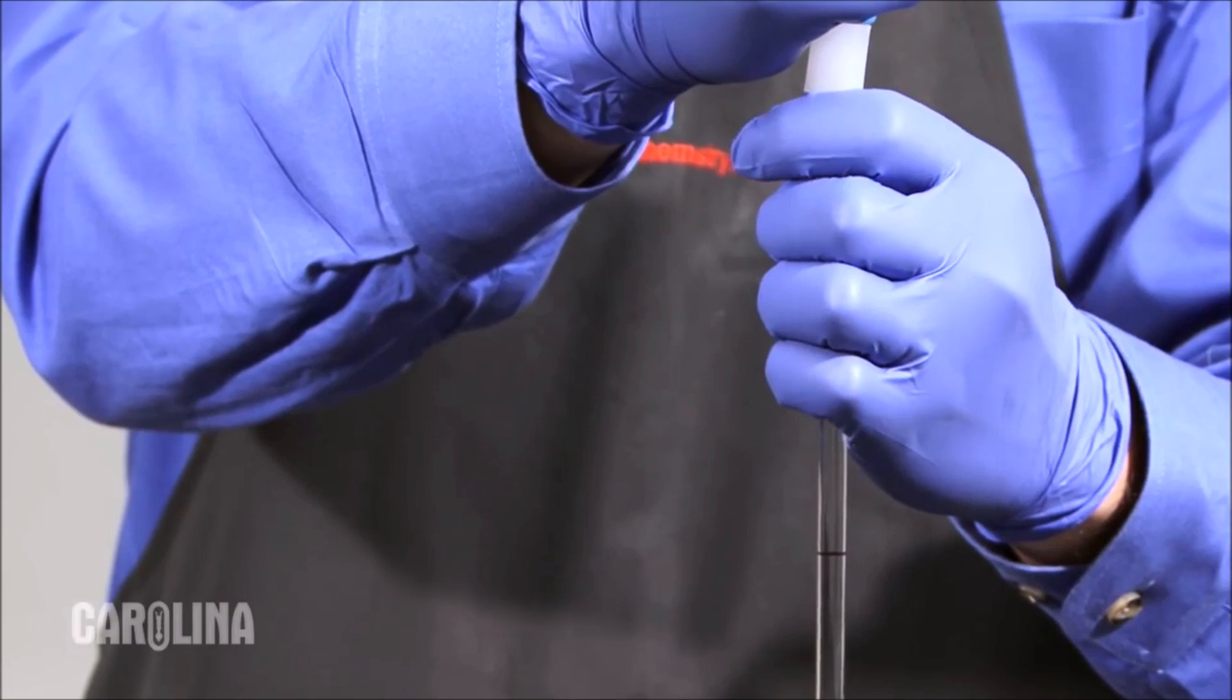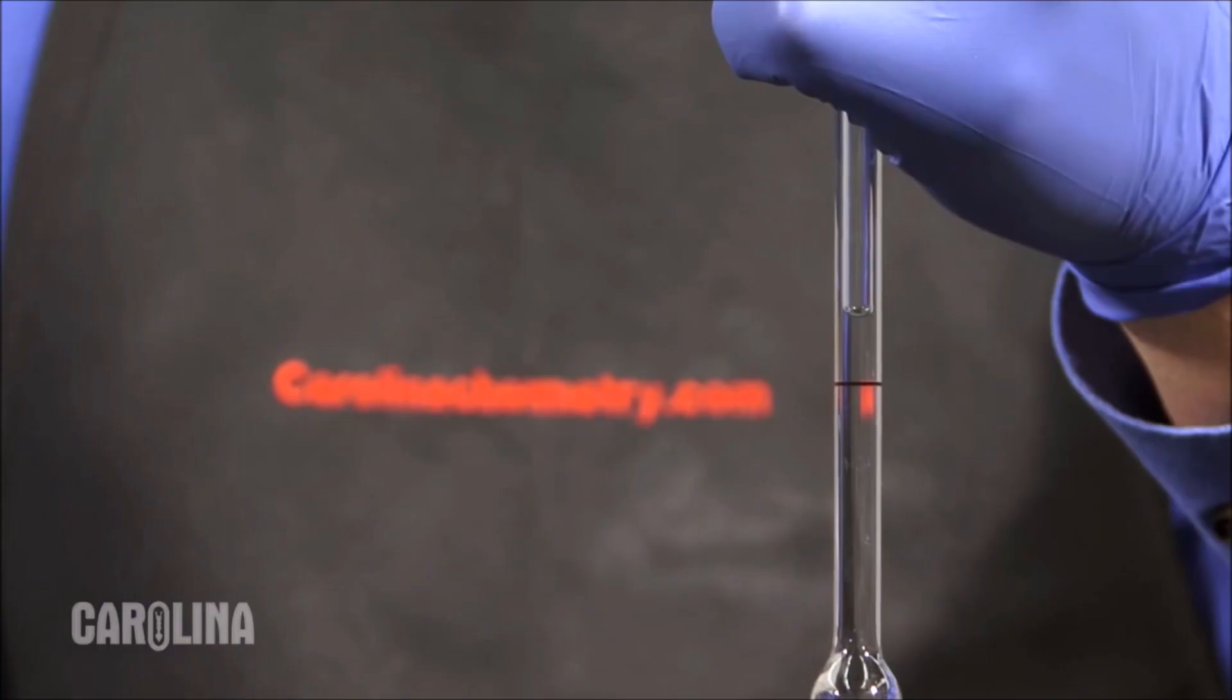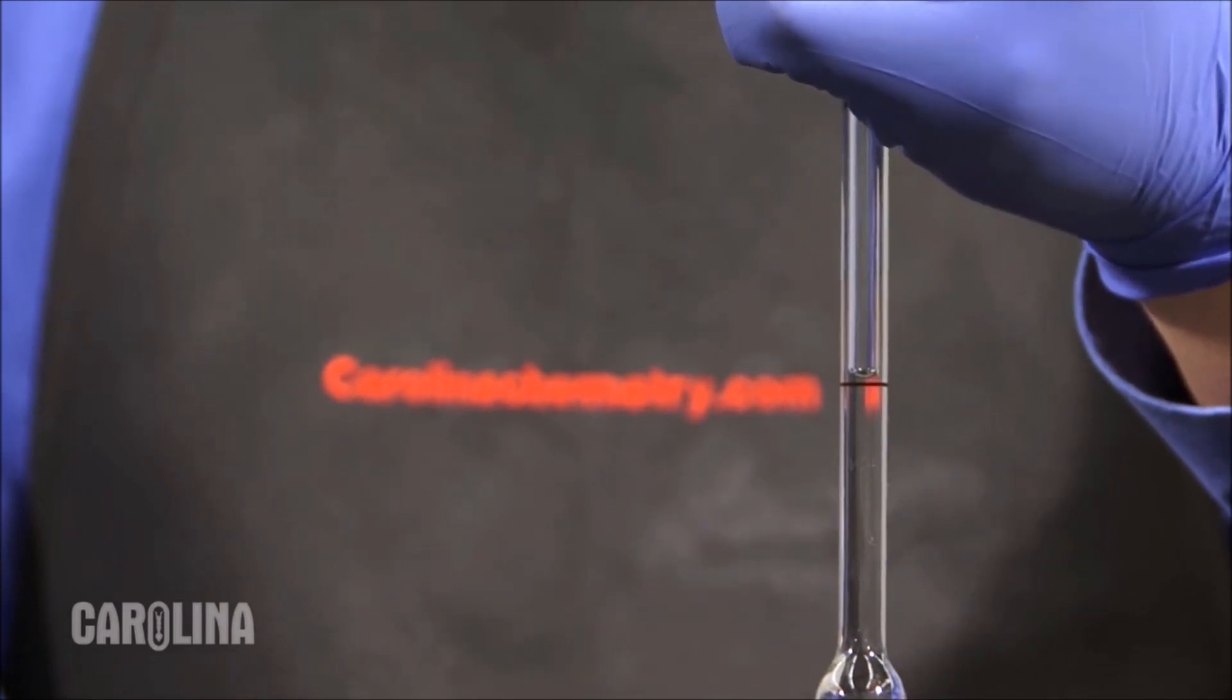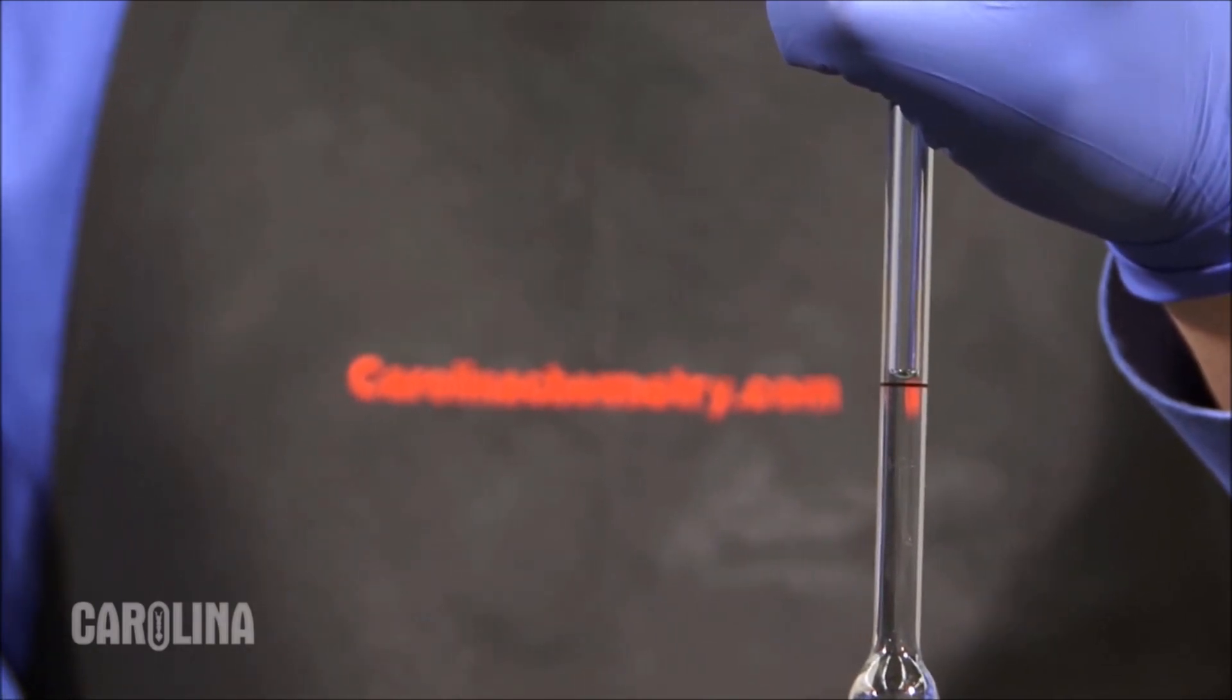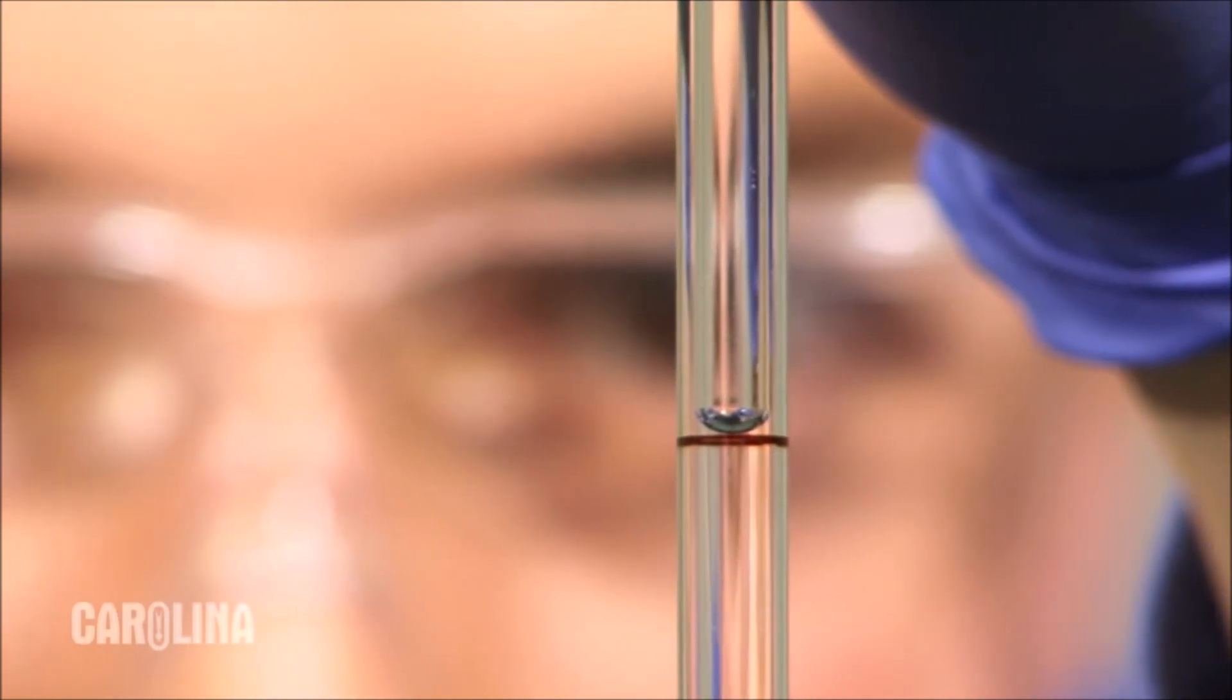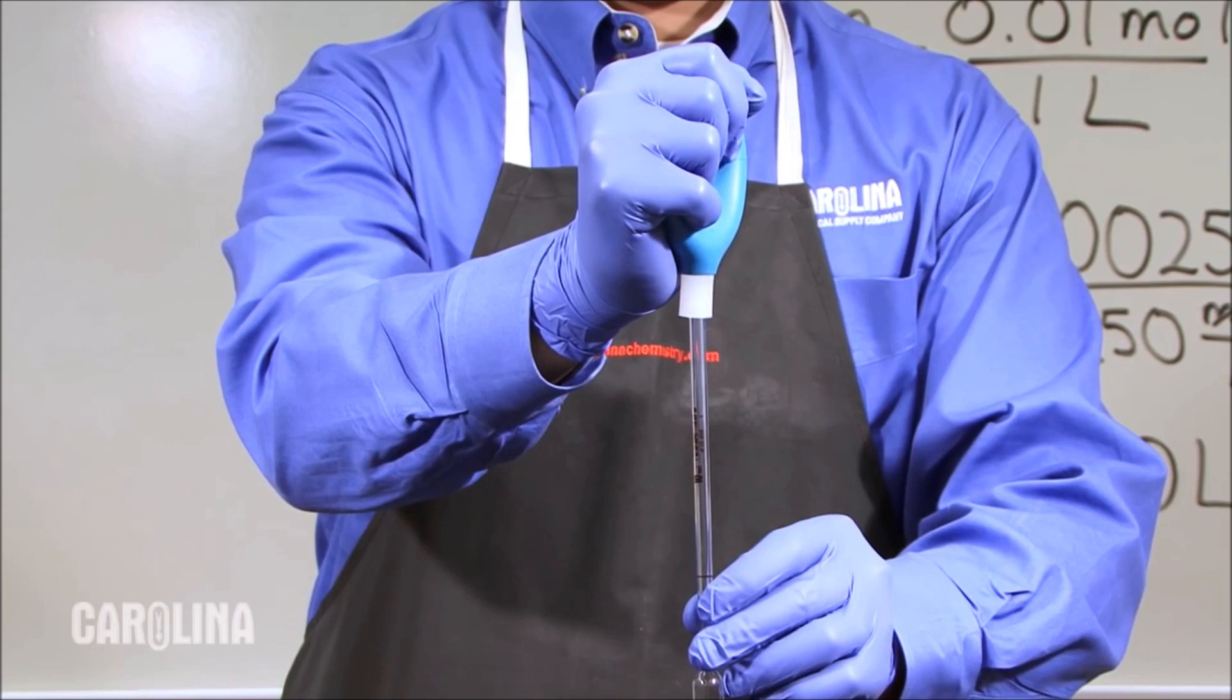Remove the bulb and place your other thumb over the end creating a seal and slowly release just the corner of your thumb, allowing the liquid to exit so that the meniscus is directly on the line marked on the pipette. This takes some practice, and you may need to use the bulb to pull more liquid into the pipette again.